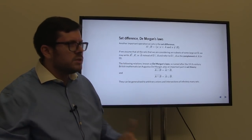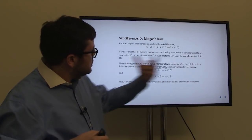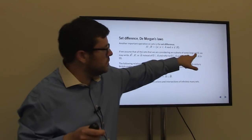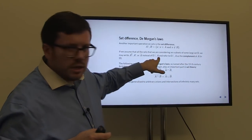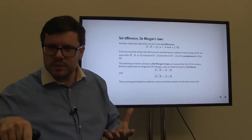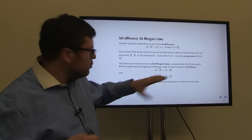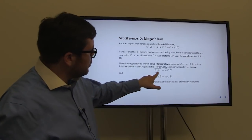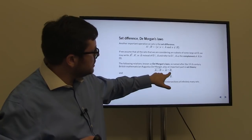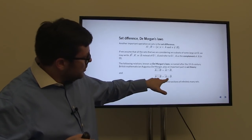If there is some big set omega that contains all elements — a kind of universal set — instead of writing omega set difference A, we can write A complement, meaning omega minus A. There are very powerful set-theoretic formulas called De Morgan's laws: the complement of (A union B) equals A complement intersected with B complement; and the complement of (A intersection B) equals A complement union B complement.